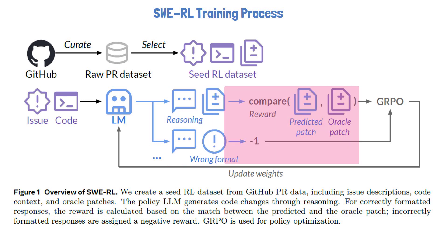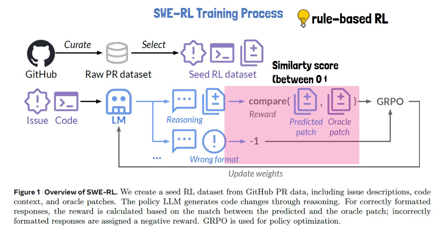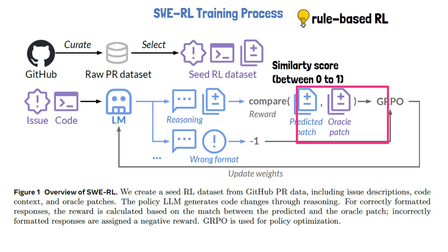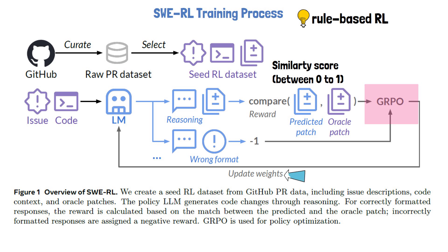Next, we calculate a reward for each of the outputs. Traditionally, a reward model is used to calculate the reward, but in this case we use rule-based reinforcement learning, similarly to DeepSeek R1's approach. The rule is different than DeepSeek R1 though. For outputs with illegal format the reward is minus one. For valid format outputs, the reward is determined using a similarity score between the predicted patch — the code changes the model generated — and the oracle patch, which is the final real merged changes for the pull request. This provides a value between 0 and 1. One limitation of this reward calculation is that it may prevent the model from exploring alternative solution approaches than the one used in the original pull request. The reinforcement learning algorithm used is GRPO, short for Group Relative Policy Optimization, same as with DeepSeek R1. Given a group of outputs, this algorithm steers the model towards the response with the highest reward.